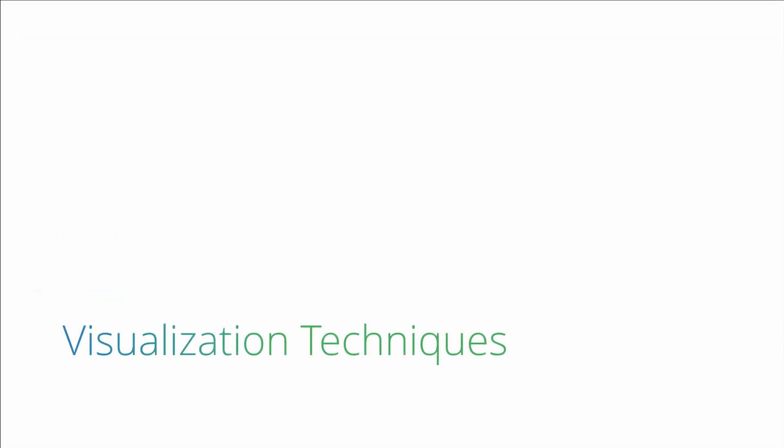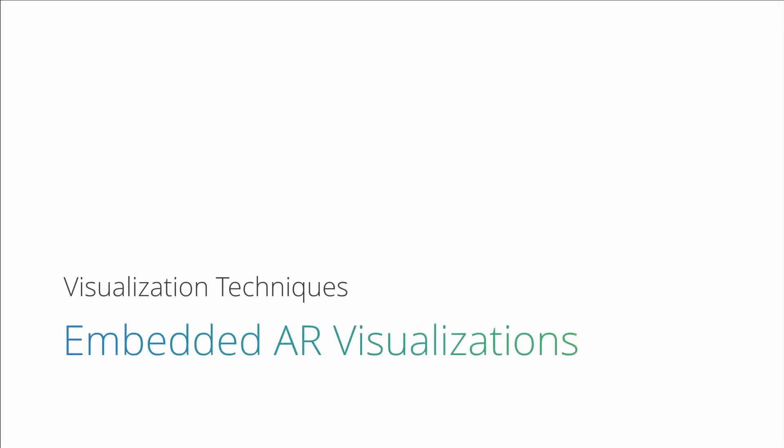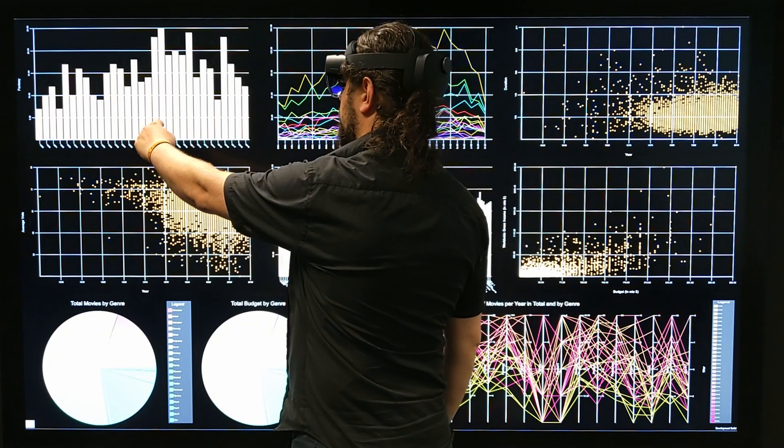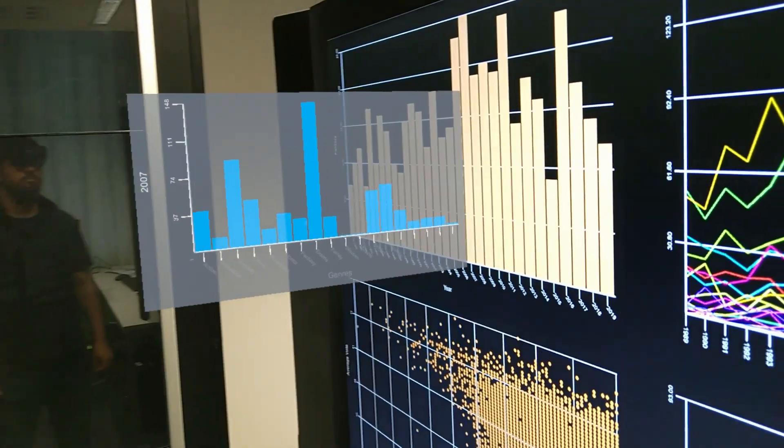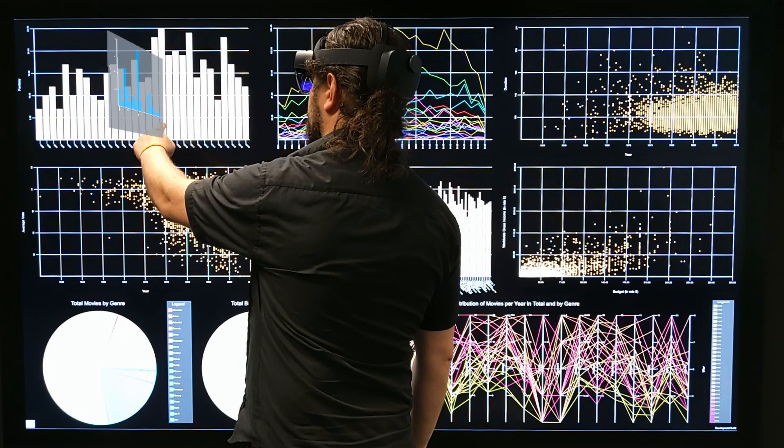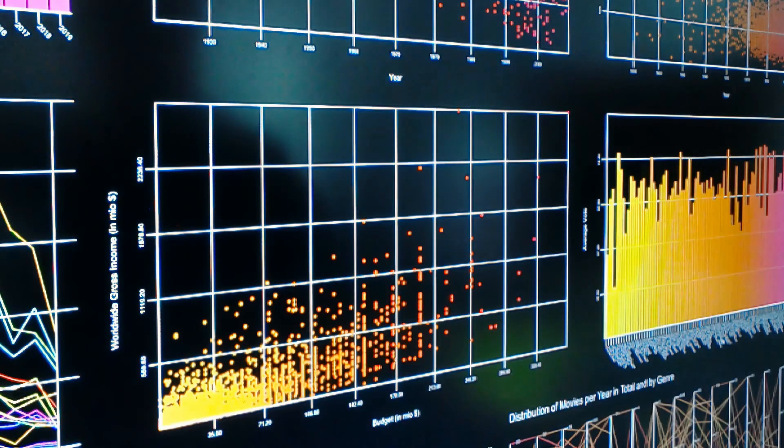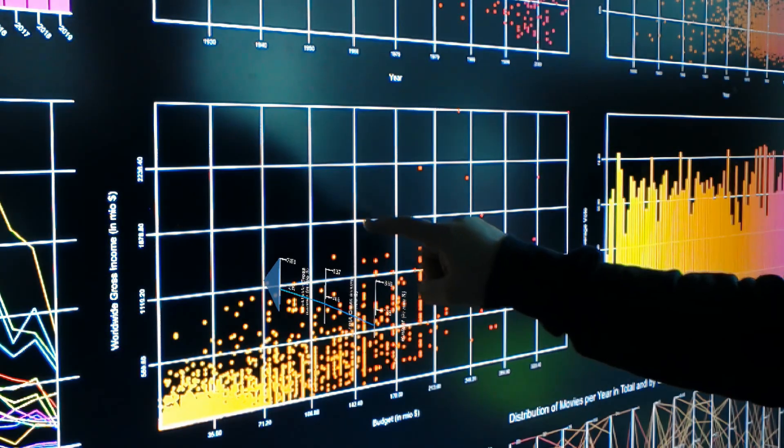We further present exemplary techniques building upon our design space and addressing common challenges with large displays. Embedded AR visualizations use the space in front of data marks or links to incorporate additional contextualized information. They can have any shape, like lines, bars, or cylinders, and extend orthogonally away from the screen.